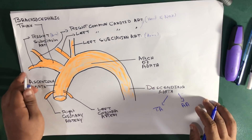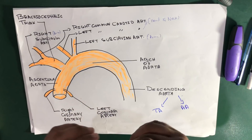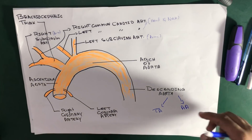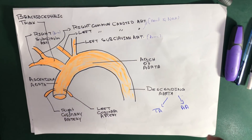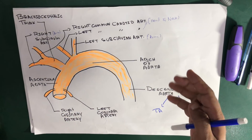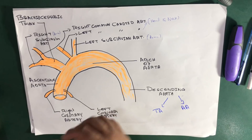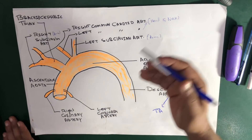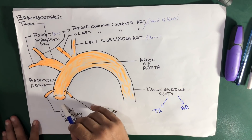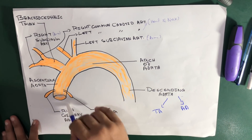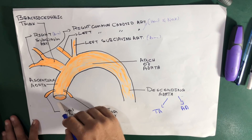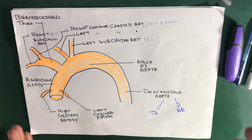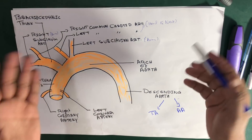Let's begin our discussion with the ascending aorta. The ascending aorta is about five centimeters, which begins at the base of the left ventricle, and it lies within the fibrous pericardium.